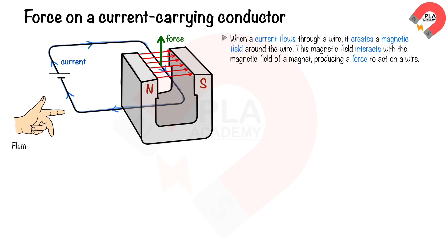The Fleming left-hand rule helps determine the direction of magnetic force on the wire. The index finger points in the direction of the magnetic field. The middle finger points in the direction of the current. The thumb points in the direction of the force, or motion. All three fingers are perpendicular to each other.